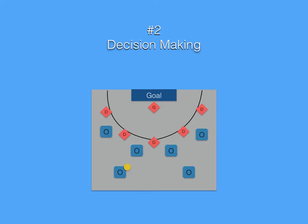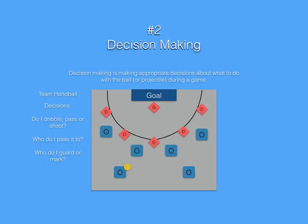The second one is decision making. Decision making is making appropriate decisions about what to do with the ball or projectile during a game. Now we're going to use team handball as an example. We have an offense and a defense. The decisions that a person with the ball needs to make are: do I dribble, pass, or shoot? Who do I pass it to? Who do I guard or mark?